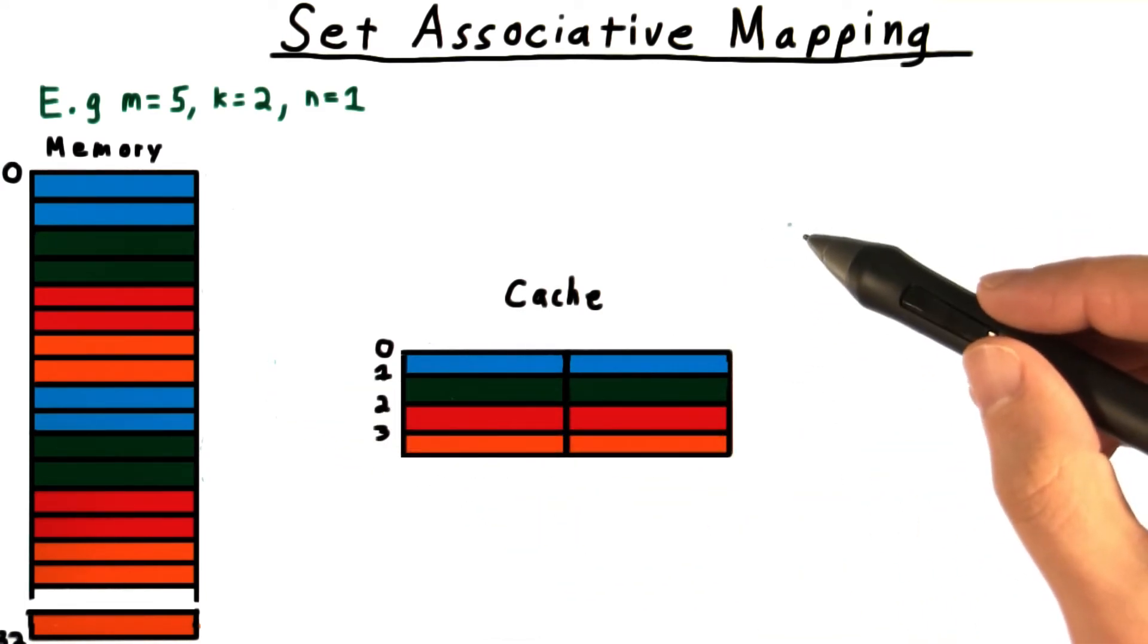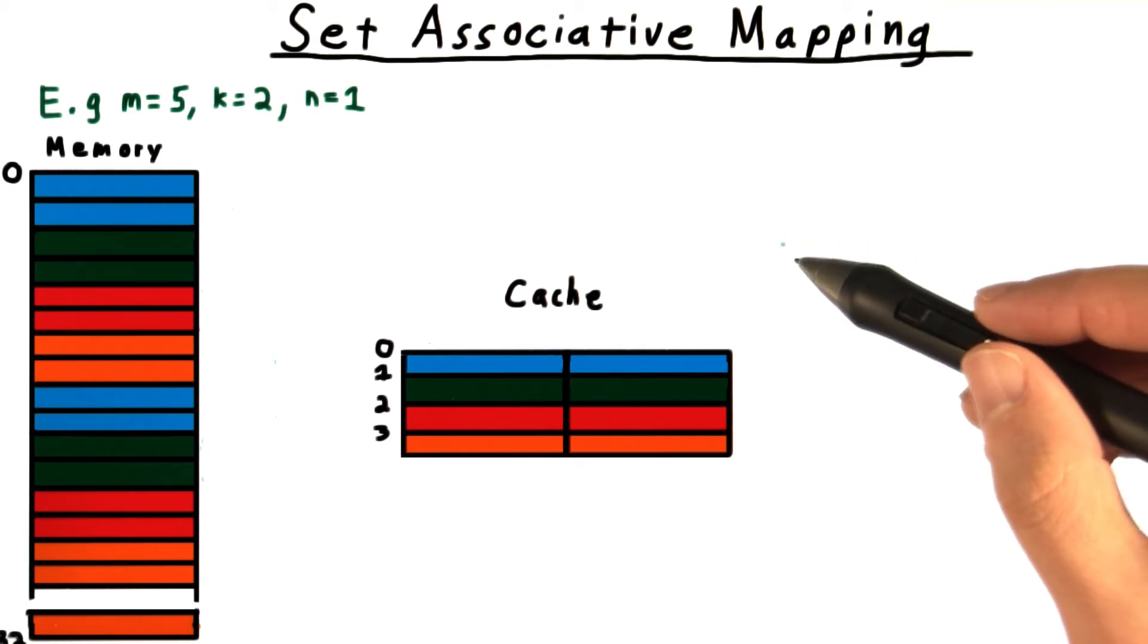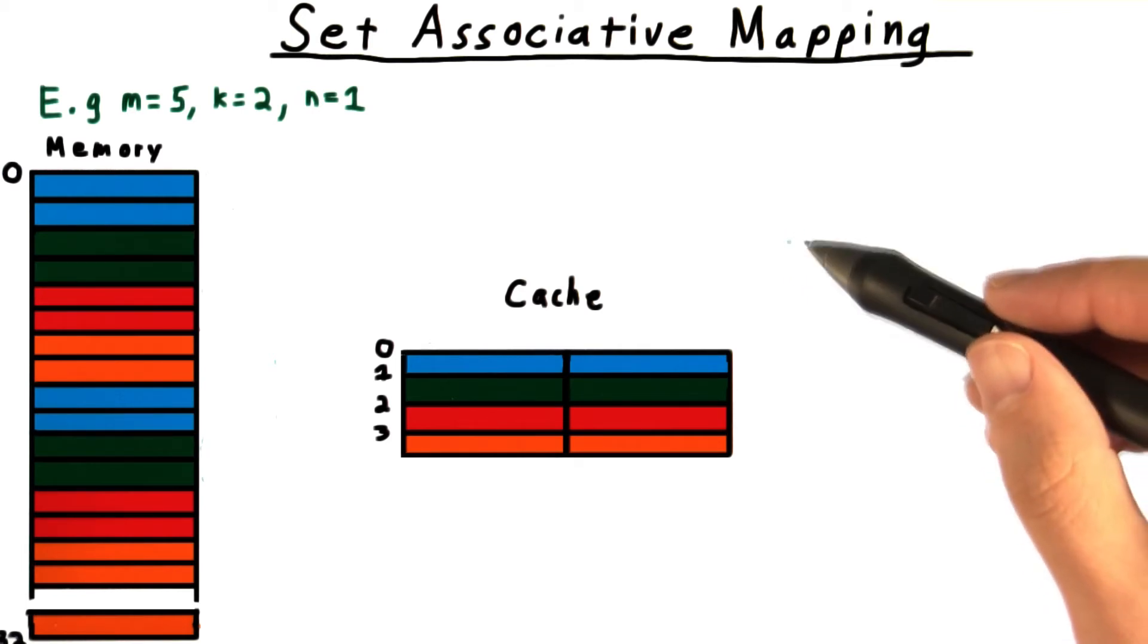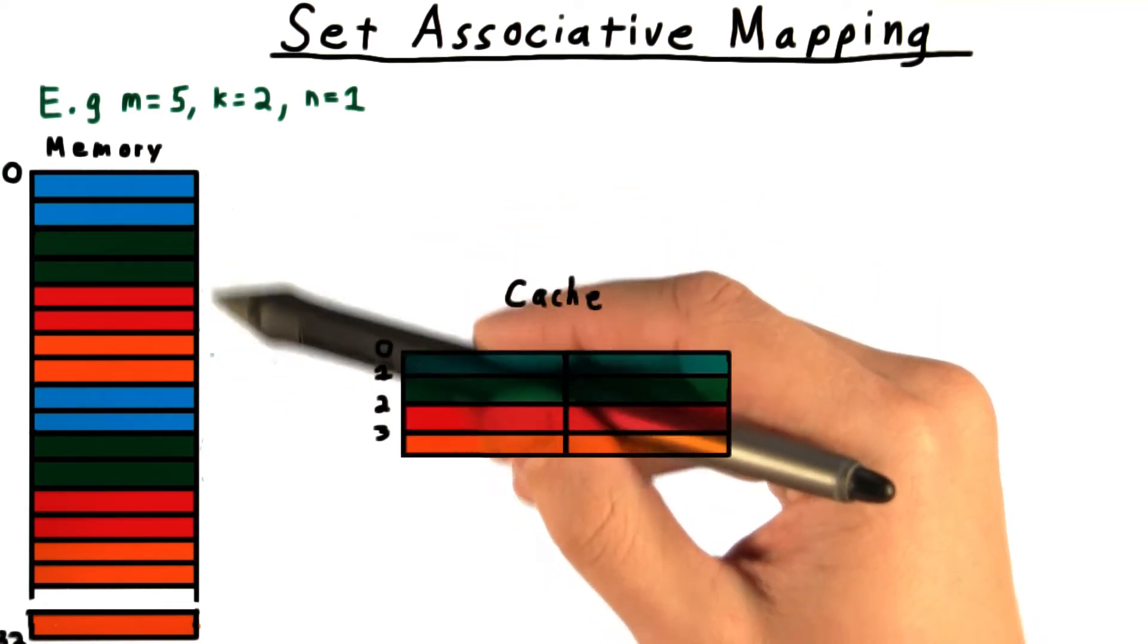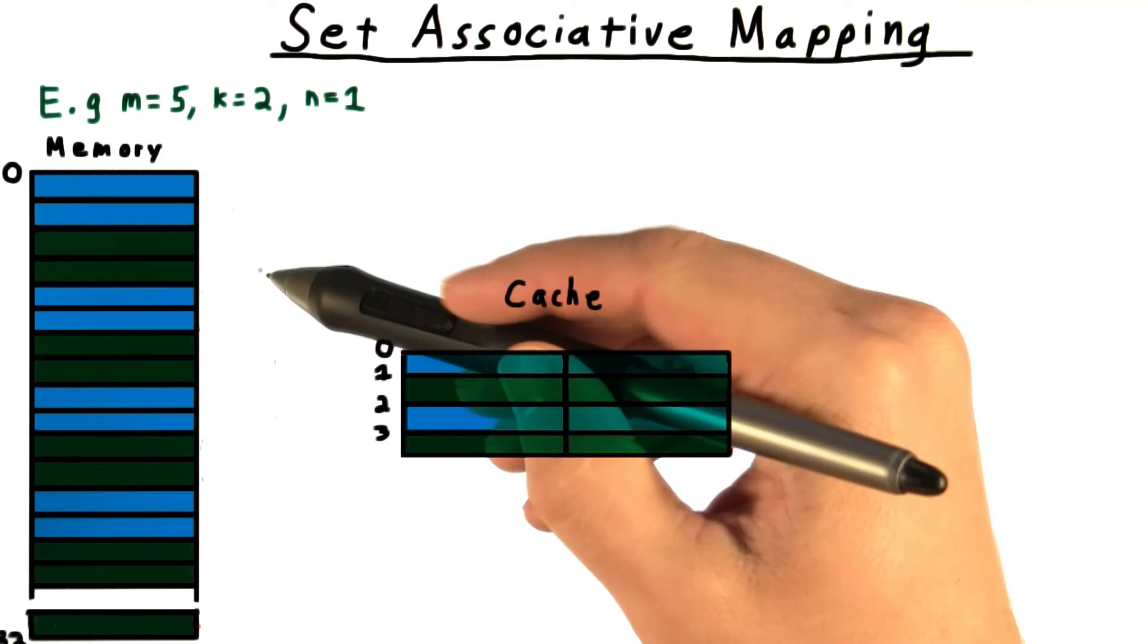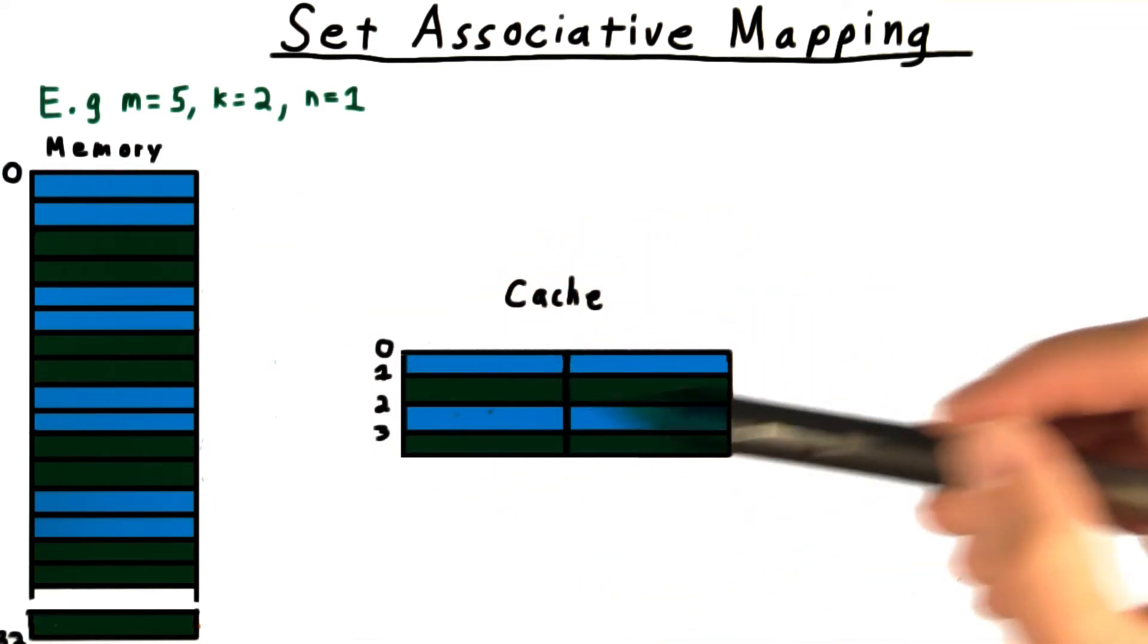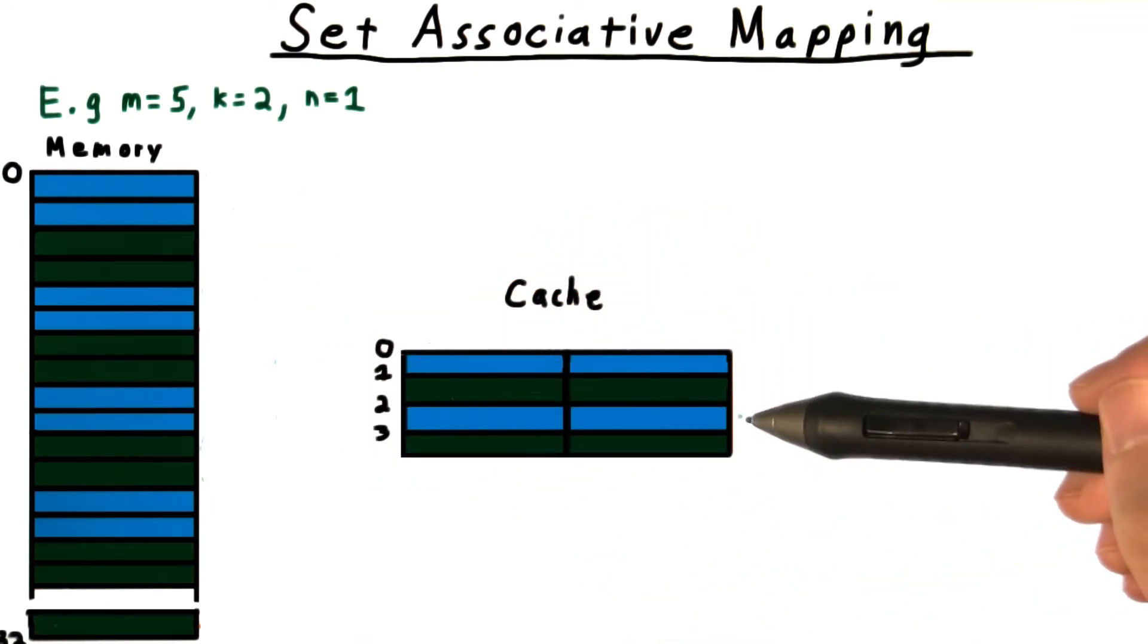We can mitigate these effects by associating an address with more than one block in the cache. One strategy is to treat all of the red lines as blue ones, and all of the orange lines as green ones. If we do this, then we'll have twice as many places in the cache to store a blue line of memory.